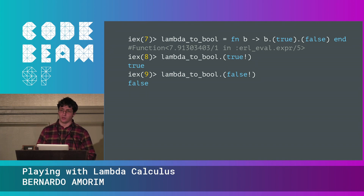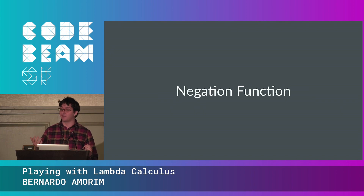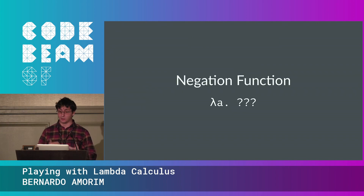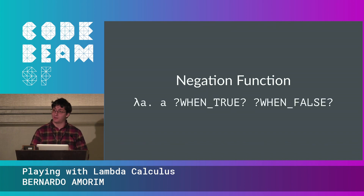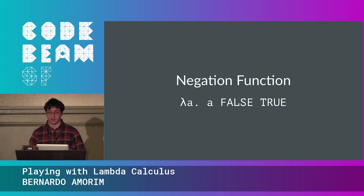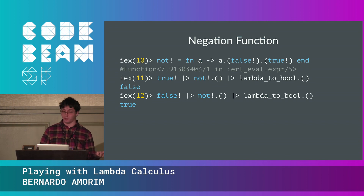With a boolean encoding, we can implement operations. A negation function receives a boolean 'a' and returns the opposite. Since 'a' is itself a function that chooses its first argument if true and second if false, we just pass it 'false' and 'true' in inverted order — and 'a' will choose its opposite. Implementing NOT in the shell confirms: negation of true is false, and negation of false is true.